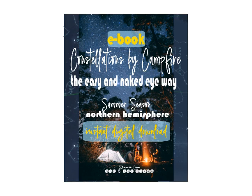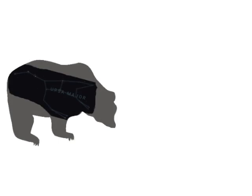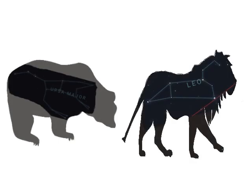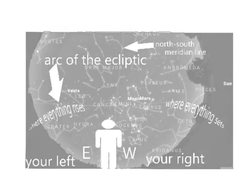You can get the e-book version instantly from our website — just head over to StarsNearMe.com and find it in our shop. The information we're starting with in this first lesson will work to identify Ursa Major or the Great Bear and the Big Dipper within it, and Leo the Lion, specifically during the month of June in the Northern Hemisphere.